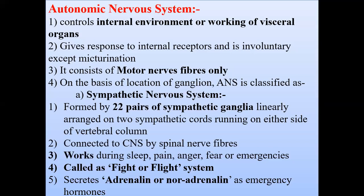On the basis of location, the autonomic nervous system is further divided into two types: the first is called the sympathetic nervous system, and the second is called the parasympathetic nervous system. The sympathetic nervous system is formed by 22 pairs of sympathetic ganglia.